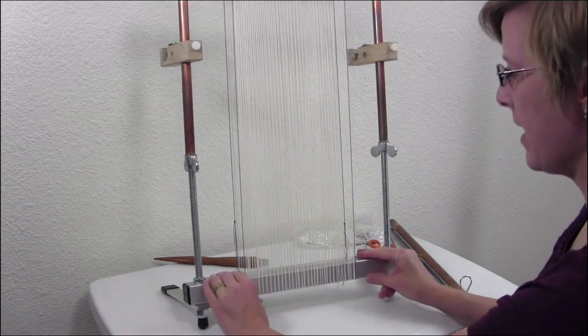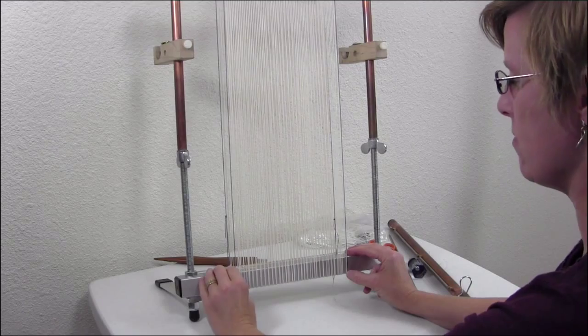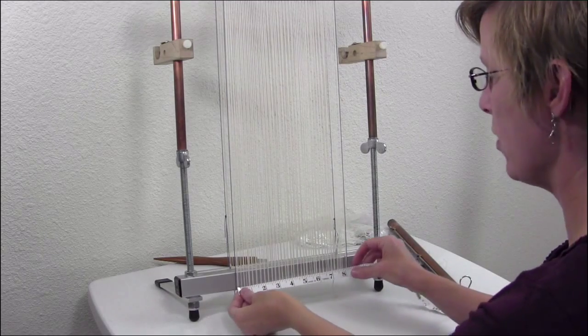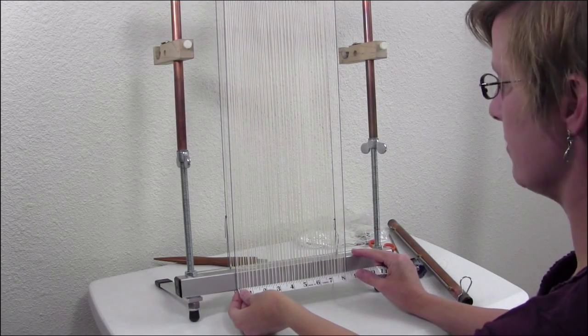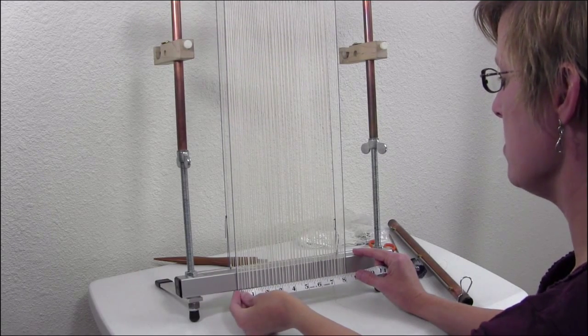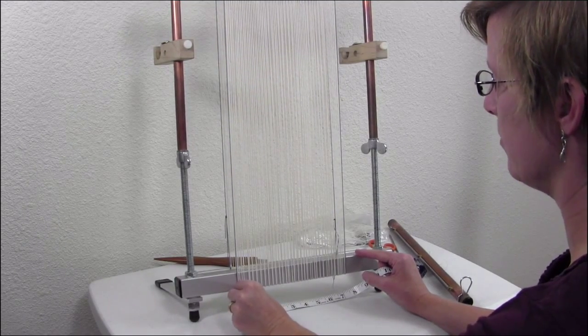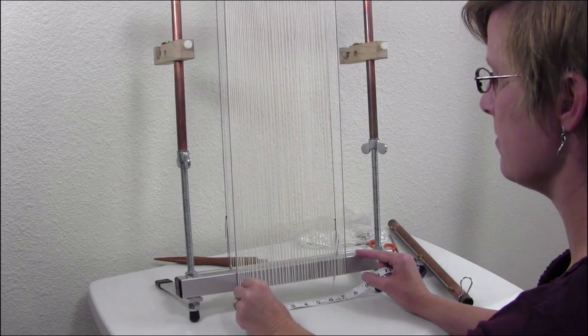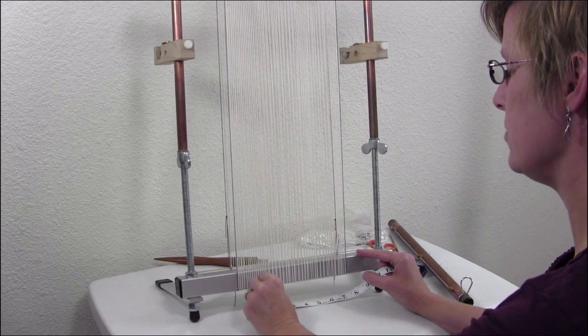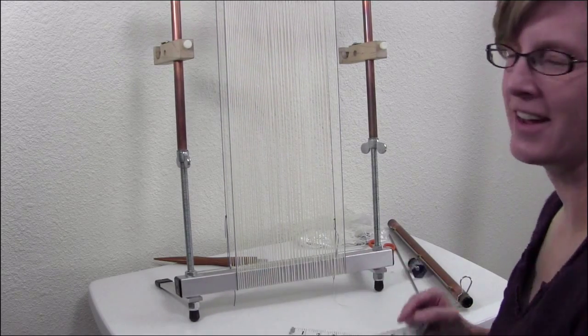But once it gets down this way, we can make sure all our ends are even. Make sure the width at the bottom is the same as at the top. This is an 8 inch warp, so I want to get 8 inches down here also. If anything, I would go just a little bit wider on the bottom. Don't go narrower because you're much more liable to pull in than push out at the start. And then I'm just going to space all these little warps. And I am ready to put my header in just as soon as I get the heddles on.